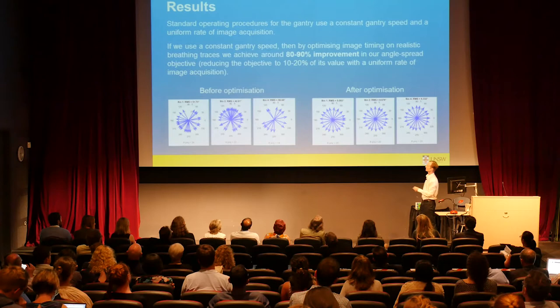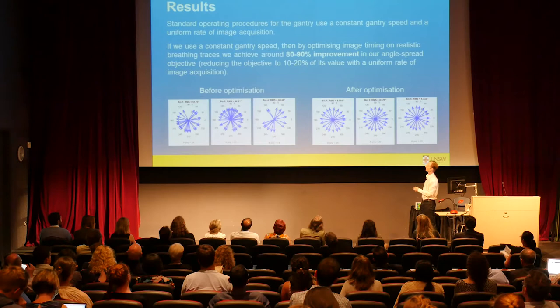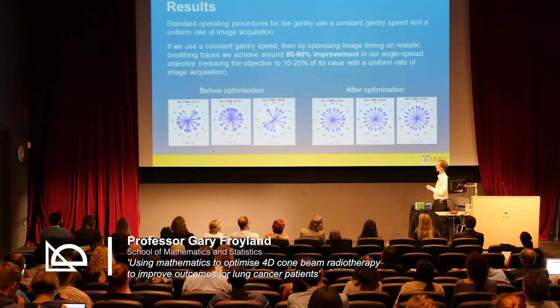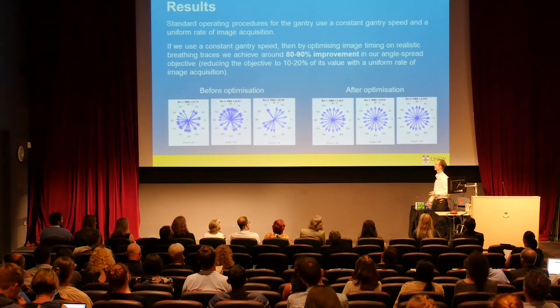Looking at the results: what's typically done is that, even though these are very fancy machines capable of all sorts of things, they often just cruise around at a constant rate and pulse every four seconds. This produces wagon wheels that are not particularly well spread and generates image artifacts like the streaks I showed. Just by retiming when you take the beams — even with constant gantry motion — you can get wagon wheels that are much better spread. This improvement is completely free: all you have to do is tell the machine to take a beam at a different time, and you get better images with nothing extra to buy.